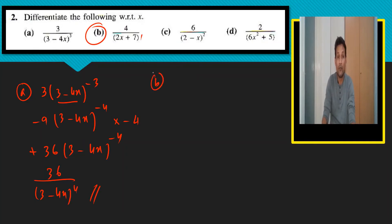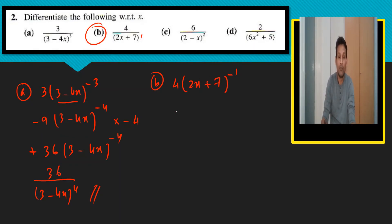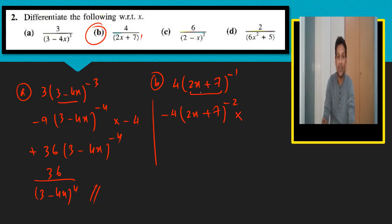Part b involves a minus power and students often get confused here. We have (2x plus 7) to the power minus 1. Differentiating: minus 1 becomes the coefficient, power reduces to minus 2, and the inner differentiation of (2x plus 7) is just 2. So minus 1 times 2 gives minus 2 over (2x plus 7) to the power 2.